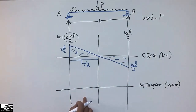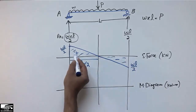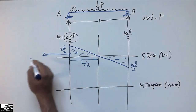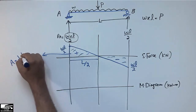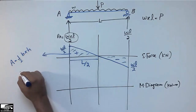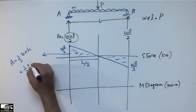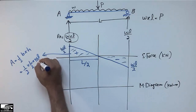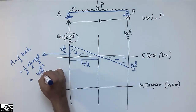To find the bending moment diagram, I calculate the area of the shear force diagram. The shear force diagram forms a triangle, so the area equals half base times height: (1/2) × (L/2) × (WL/2), which equals WL²/8.